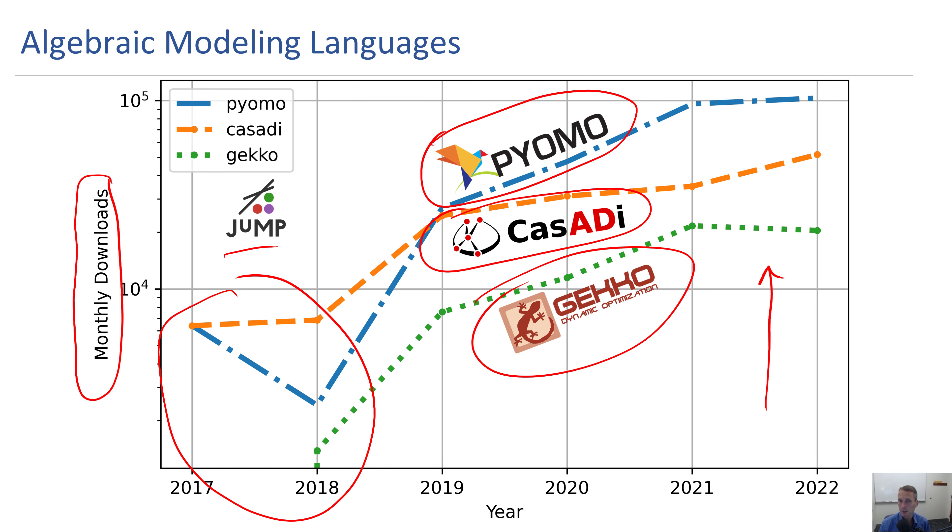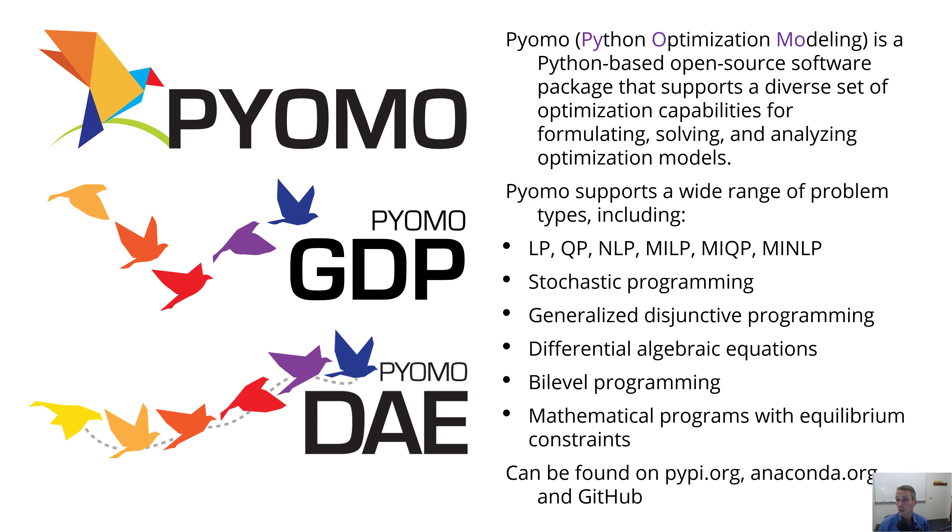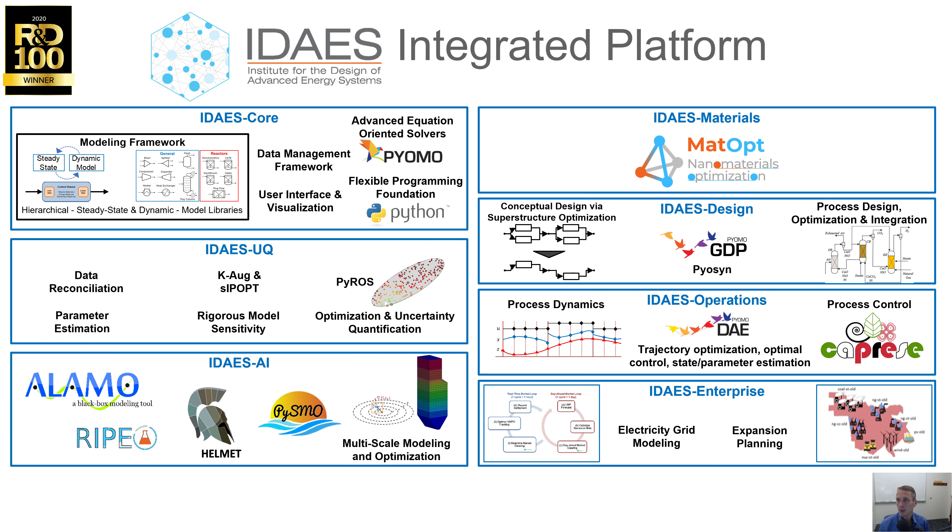Let's talk about Pyomo. That was at the top of the list. It's a Python-based open source package that supports a variety of problems including linear programming, quadratic, nonlinear programming, mixed integer linear programming, mixed integer quadratic, nonlinear, stochastic, generalized disjunctive programming, and many other areas.